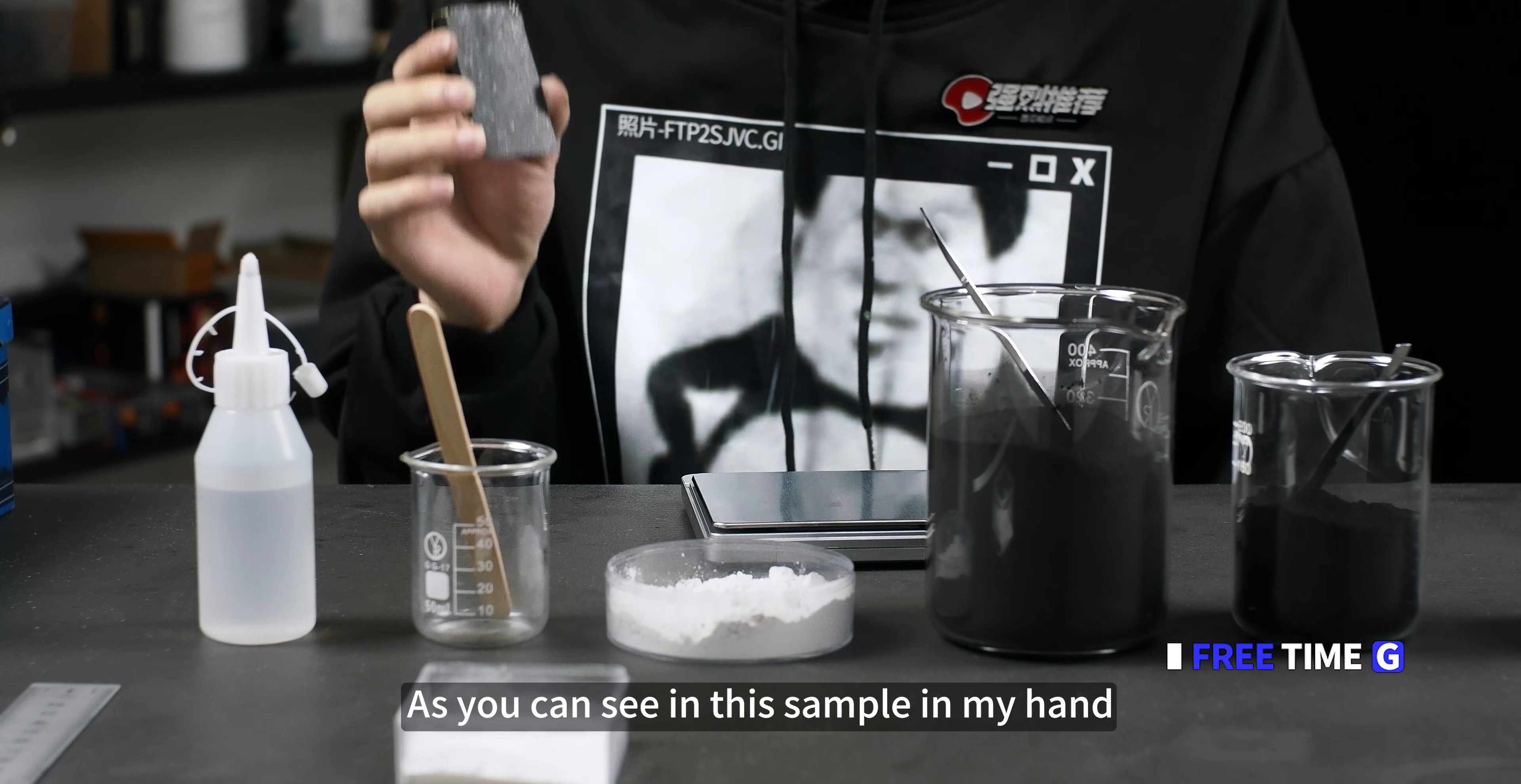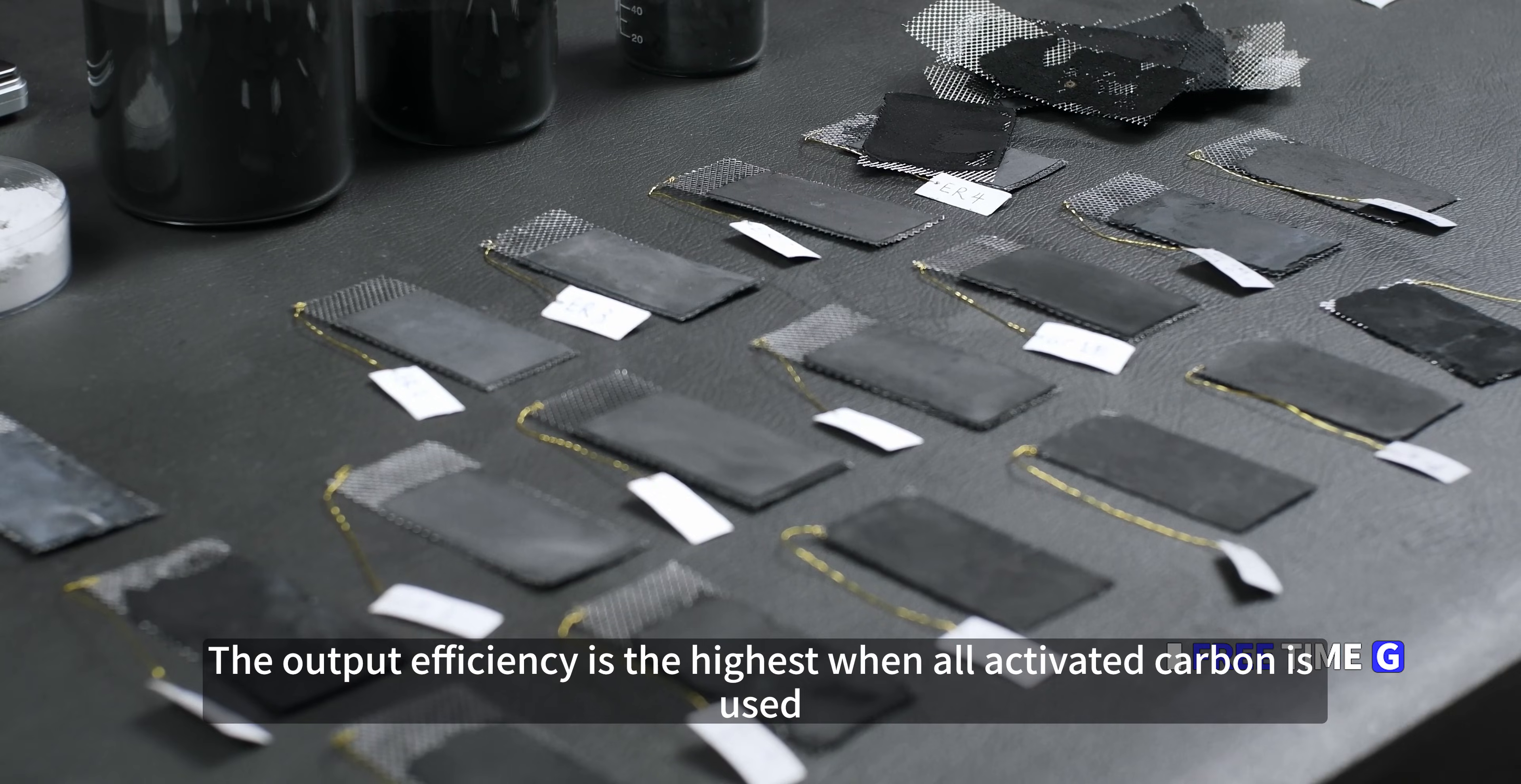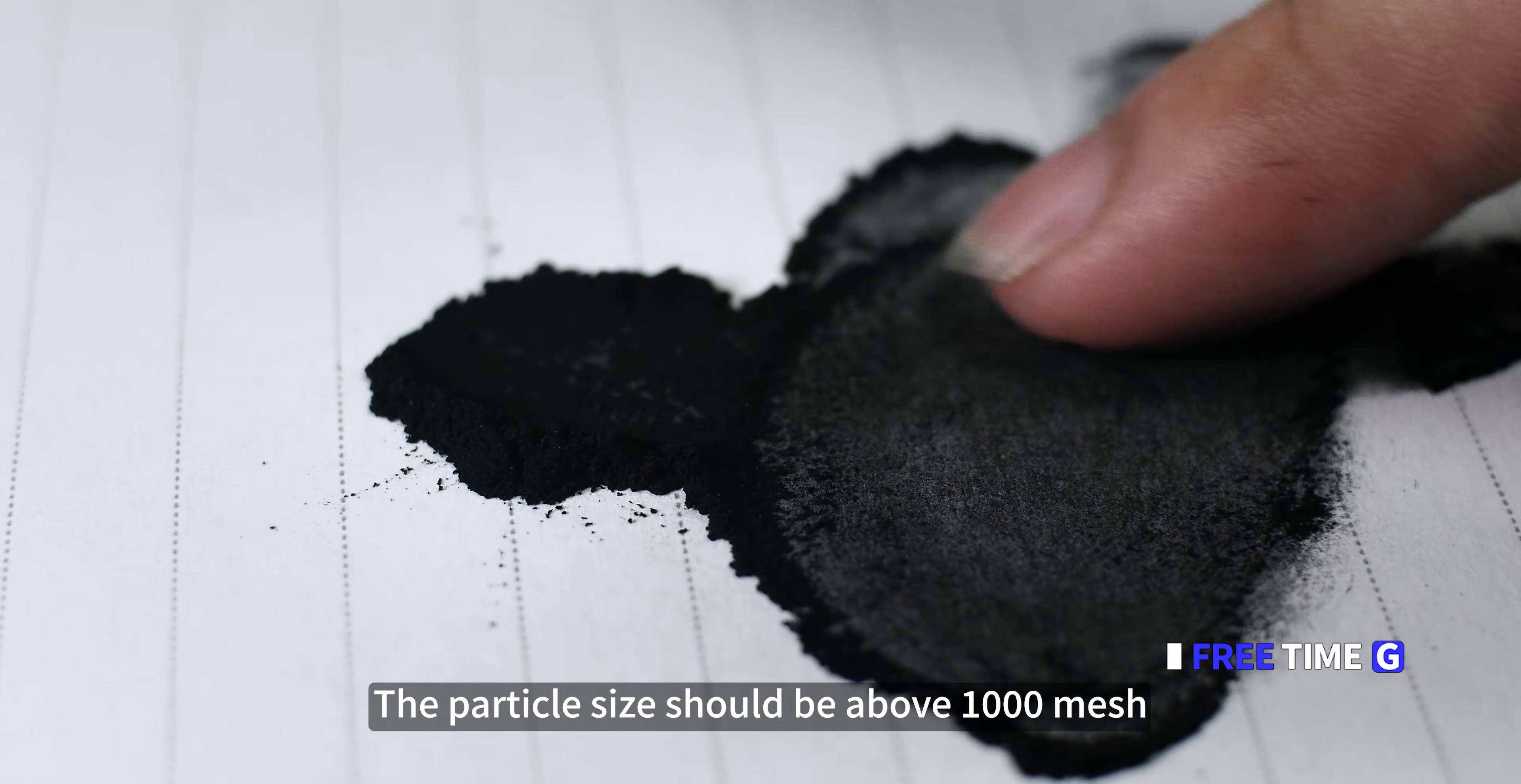I think if you DIY this to simplify the process and reduce costs, output performance is almost good. It's not that it can't be used. So the catalyst is unnecessary. Then the three-layer structure of the electrode is changed to a two-layer structure. One layer is a metal collector mesh. The other layer is both a waterproof and breathable layer and a reactive layer. The reaction takes place at the interface of this liquid. As you can see in this sample in my hand. Electrode material mass ratio: 10 grams of activated carbon plus 2 to 3 grams of binder is enough. Do I need to add graphite or carbon black to increase conductivity? The answer is no. Because after many of my tests, the output efficiency is the highest when all activated carbon is used. Activated carbon has a porous structure, more conducive to air diffusion. Activated carbon made from coconut shells is recommended. Dense texture. The particle size should be above 1000 mesh.